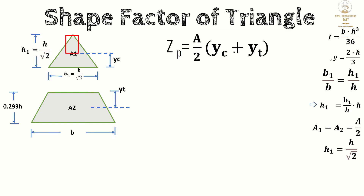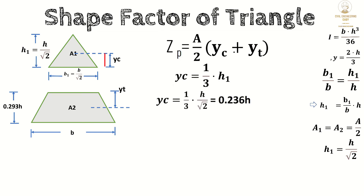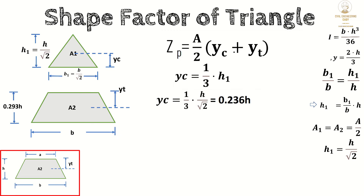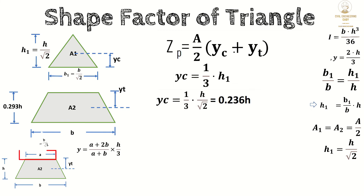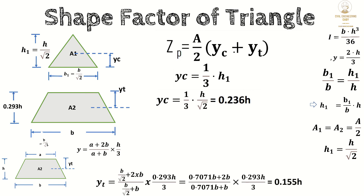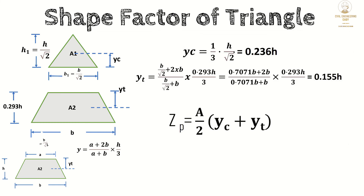Now we calculate distances yc and yt. The centroid of the upper triangle is at 2h/3 from apex, and yc — the distance from the centroid of the upper triangle to the equal area axis — is located at 1/3 of h/√2, giving yc = 0.236h. For the trapezoid, the centroid distance from the top is (a + 2b)/(a + b) × h/3. With a = b/√2 and trapezoid height 0.293h, we get yt = 0.155h.